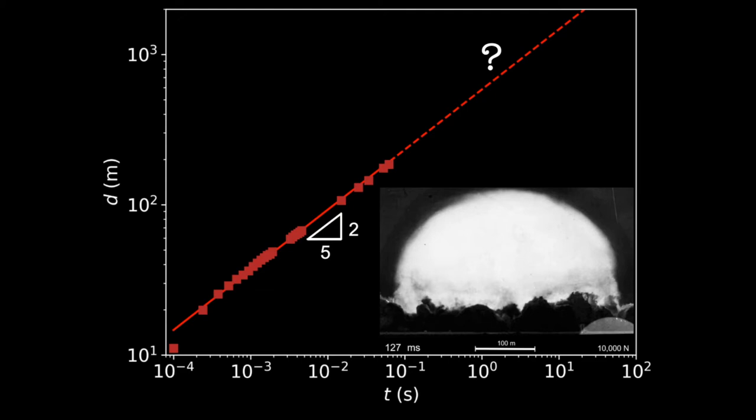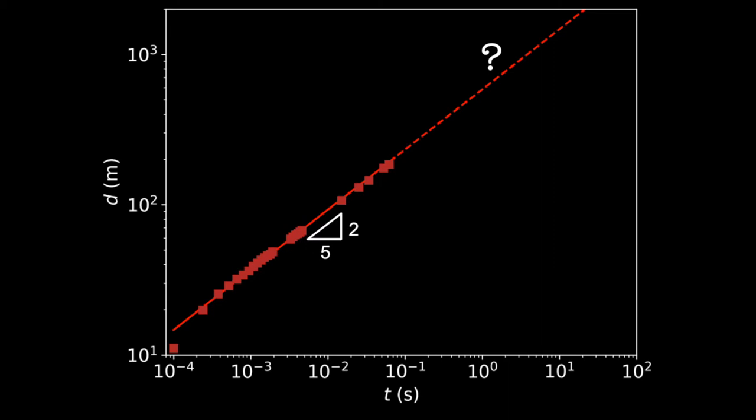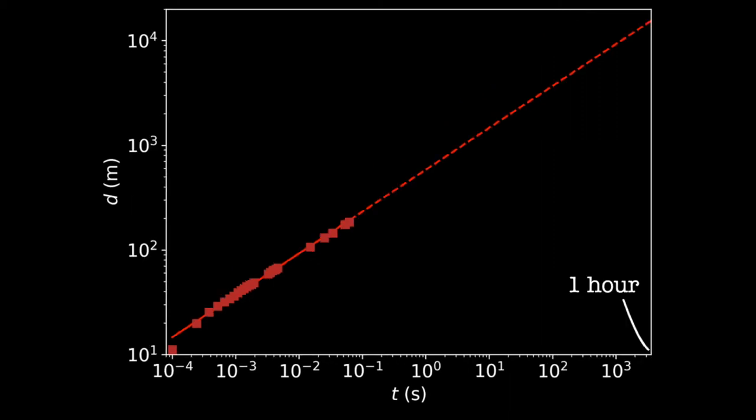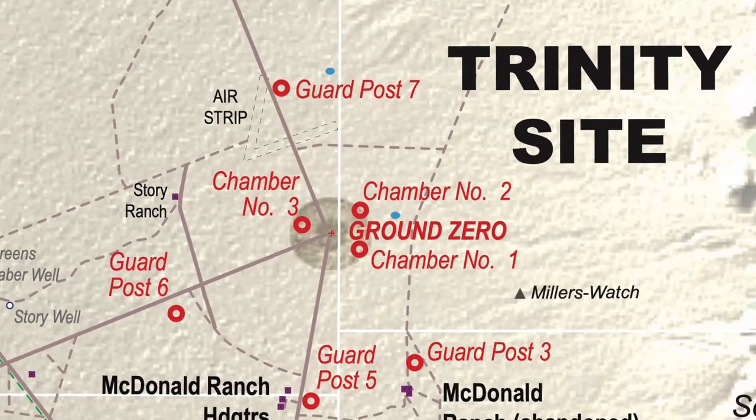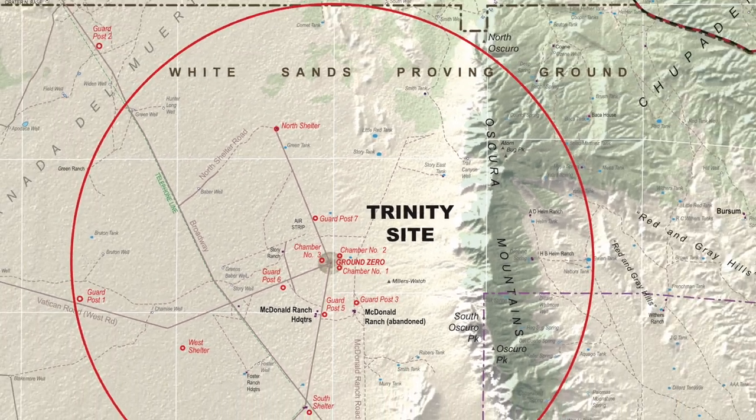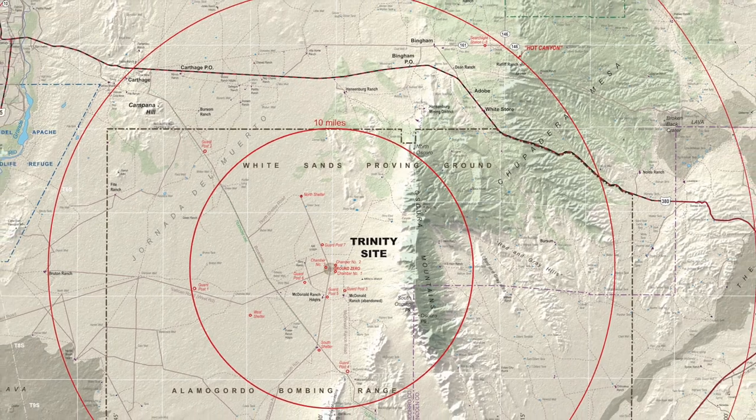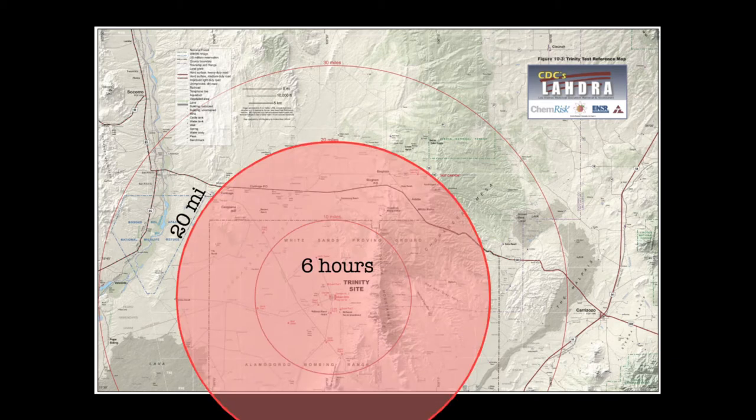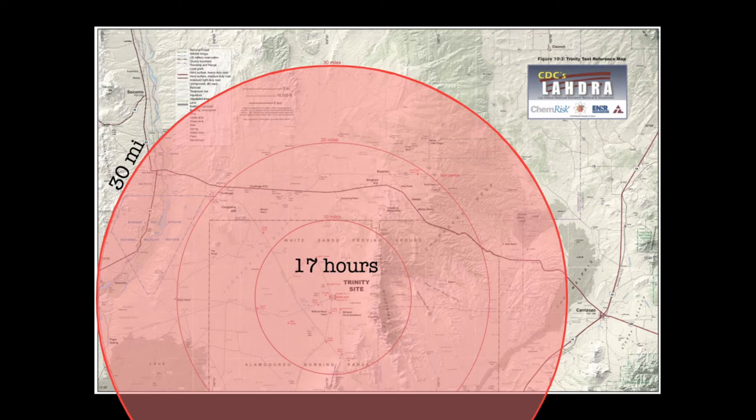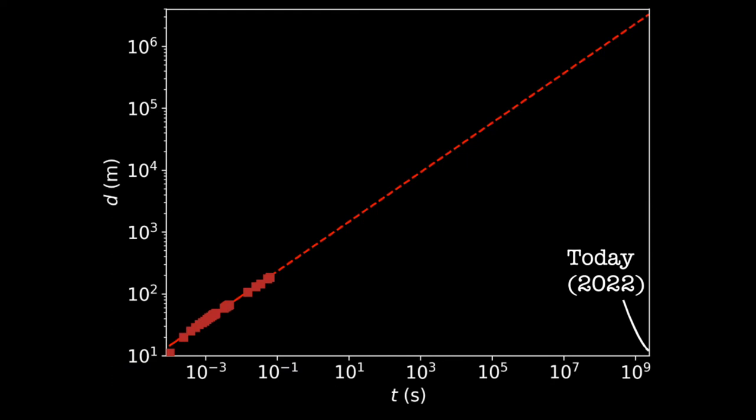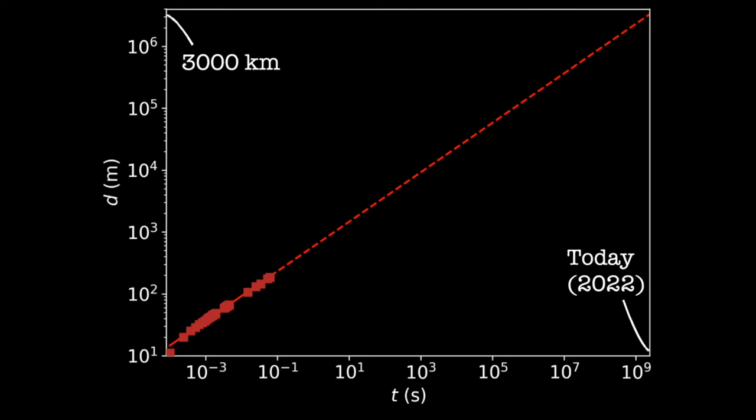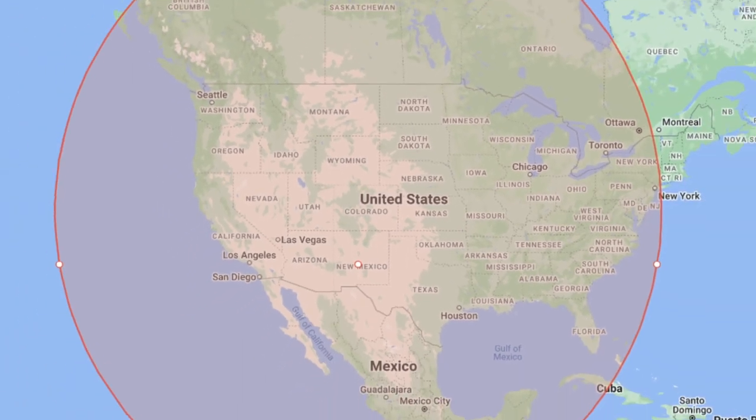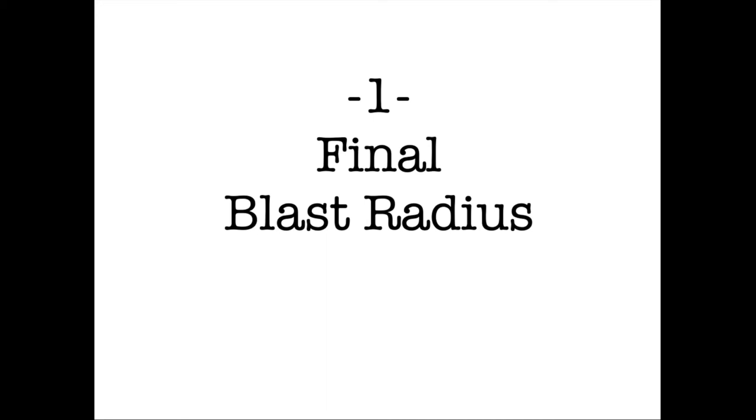Luckily, the explosion doesn't go on according to Taylor's regime forever. Let's imagine for a moment that it did. Then, one hour after detonation, the radius of the blast would be over 15 kilometers. Pretty bad news for all the personnel in the shelters around 9 kilometers away from ground zero. By 2022, 77 years after detonation, Taylor scaling would predict a blast with a radius over 3000 kilometers. Bad news for a lot of people.